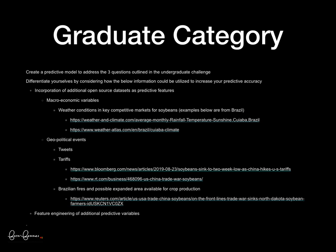In the Graduate Challenge, we're really looking to see your creativity. We expect the same three predictive models discussed in the Undergraduate Challenge, but we'd also like to see you differentiate yourself by including additional data features. We've included some new datasets and links to access additional data to increase your predictive accuracy — that includes macroeconomic conditions, key export markets or competitive markets to the U.S. soybean market, weather in Brazil, how fires in the rainforest are impacting crop production, how the geopolitical climate is changing the soybean market, how tweets impact soybean farmers, and how the tariff wars are impacting U.S. farmers.